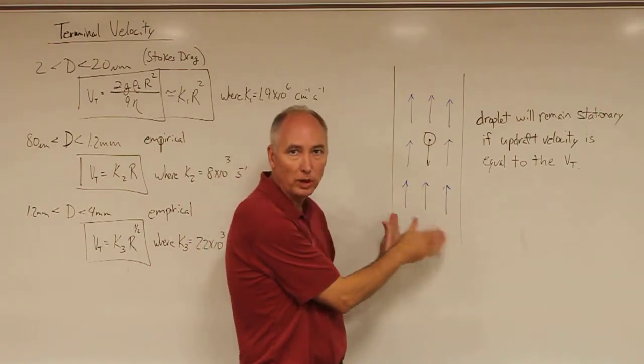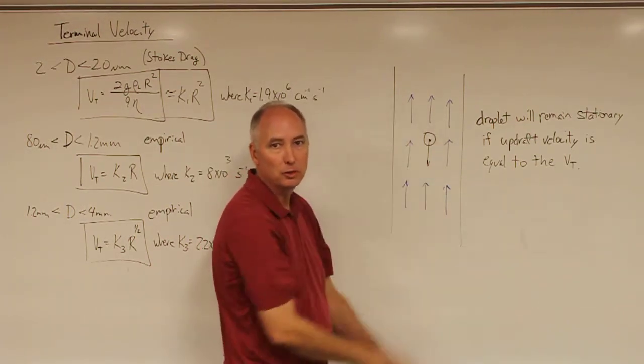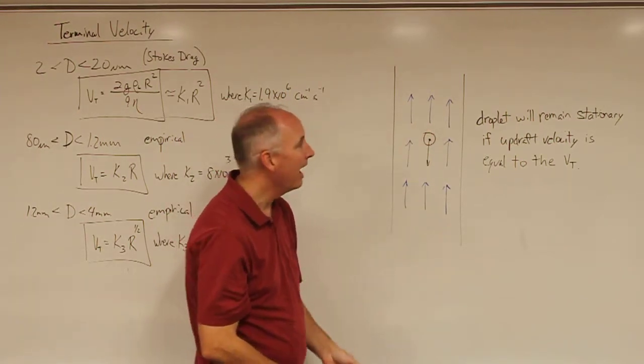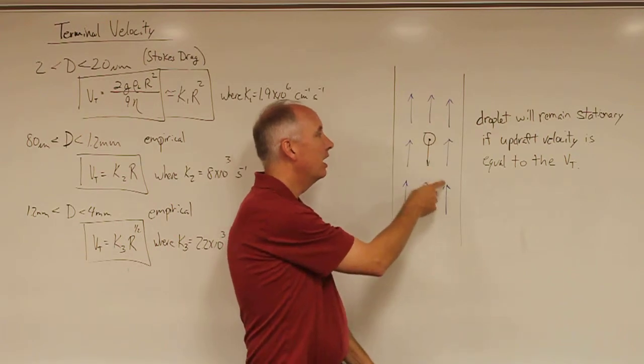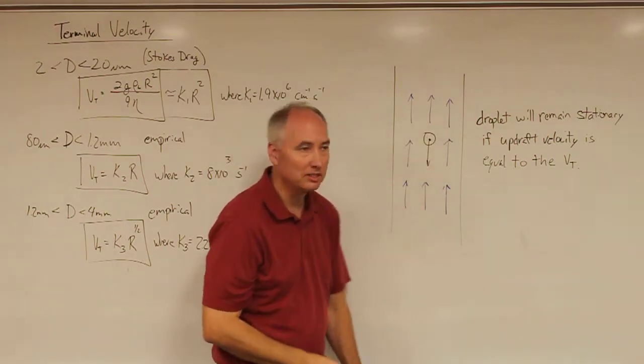In this wind tunnel, they got laminar flow moving up, and they would insert a droplet into the system, and they would match the updraft speed to the fall speed of the droplet. If you do that, the droplet will remain stationary inside this updraft.